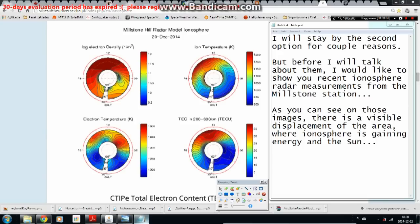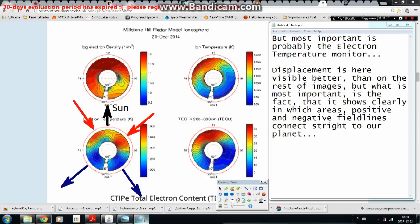But before I will talk about them I would like to show you recent ionosphere radar measurements from the Millstone station. As you can see on those images there is a visible displacement of the area where ionosphere is gaining energy and the sun. But most important is probably the electron temperature monitor. Displacement is here visible better than on the rest of images. But what is most important is the fact that it shows clearly in which areas positive and negative field lines connect straight to our planet.